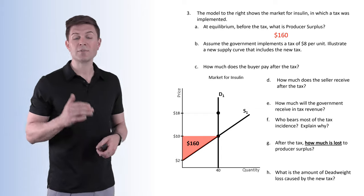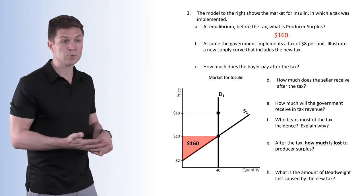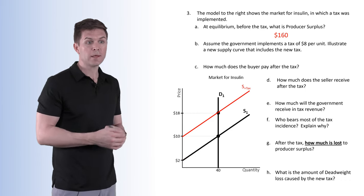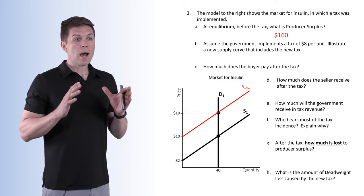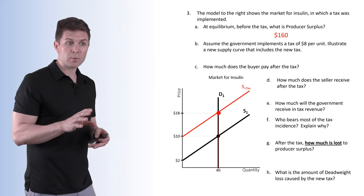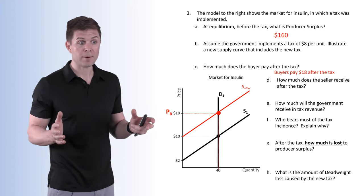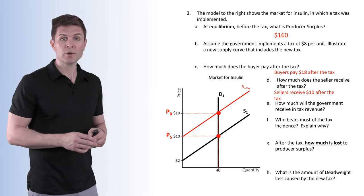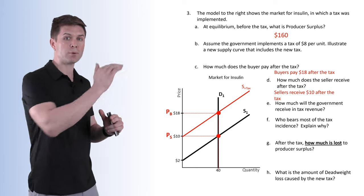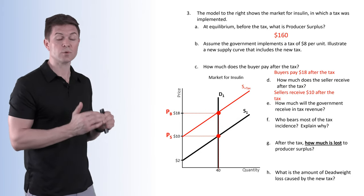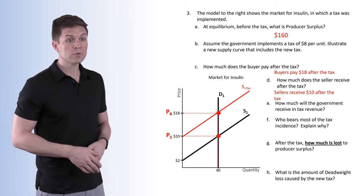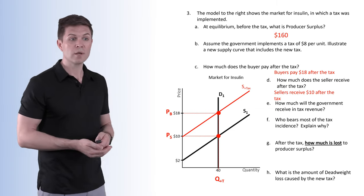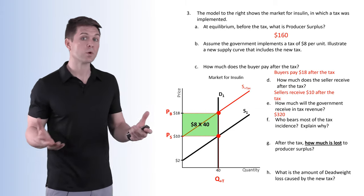Assume the government implements a new tax of $8 per unit. We include a supply curve that is $8 higher, shifting it up — our S-plus-tax curve. How much does the buyer pay after the tax? At our new equilibrium, the buyer is going to pay $18. How much does the seller receive? $10. So the seller submits the $8 tax payment, the buyer's price is $18, and the seller still receives $10. Tax revenue is $8 per unit times 40 units — $320.